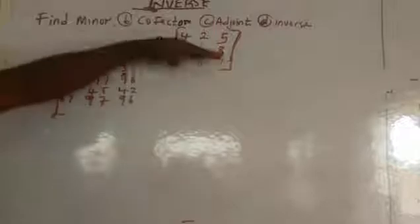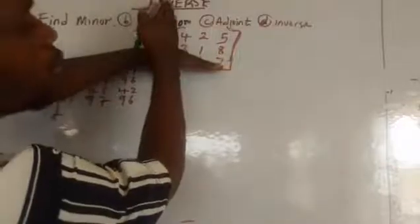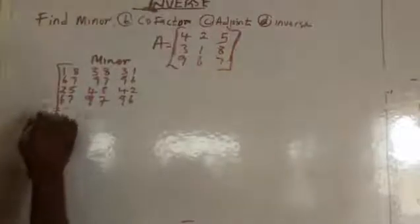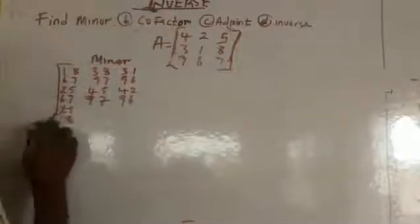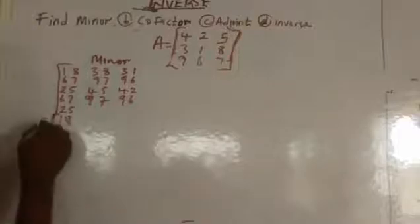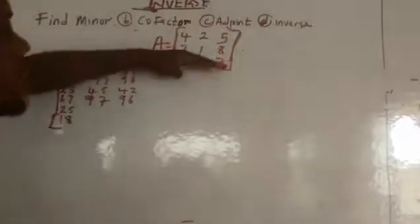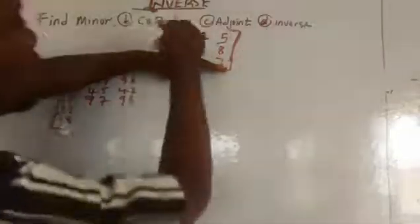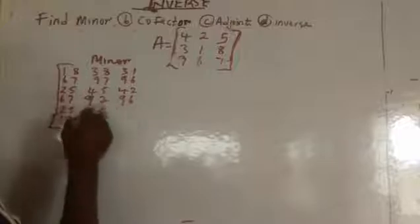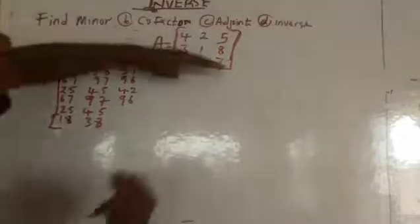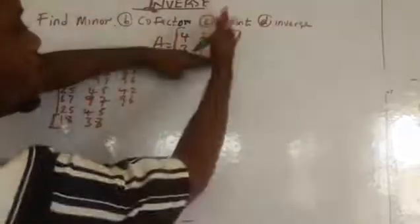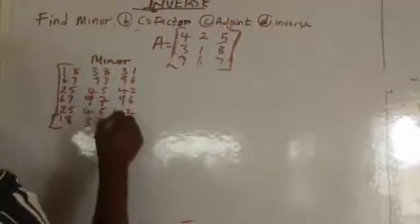Now let's go to the third row. Delete the third row and first column — we have 2518. Third row and second column — we have 4538. Third row and third column — we have 4231.